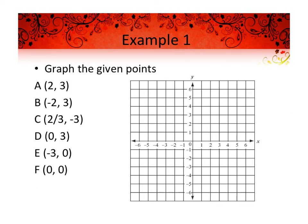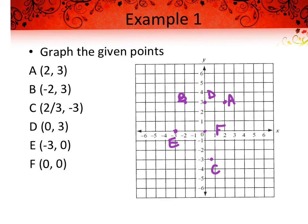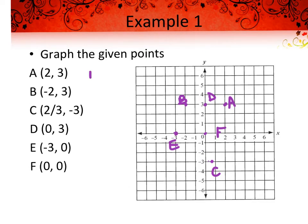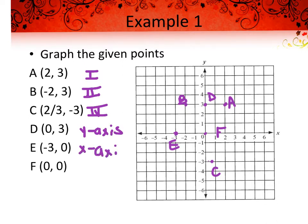Go ahead and plot these points, label them, and then list which quadrant they lie in. Point A is in quadrant one, B is in quadrant two, C is in quadrant four, D is on the y-axis, E is on the x-axis, and F is at the origin. If a point is not in a quadrant and is on an axis, you just give the axis name.